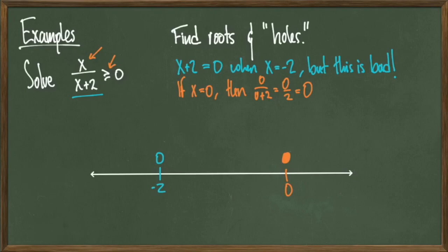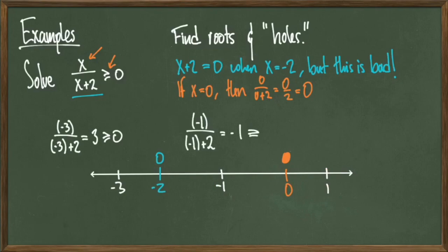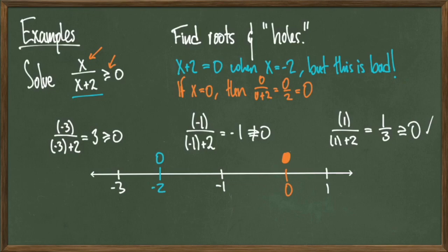But 0 is a root and my inequality involves a greater than or equal to sign, so I'll shade that circle in because that point is going to be included in my solution set. Now I can pick test points: negative 3, negative 1, and positive 1. Plugging in negative 3 gives me positive 3, which is greater than 0. Plugging in negative 1 gives me negative 1, which is not greater than 0. Plugging in positive 1 gives me positive 1 third, which is greater than or equal to 0. I want the x values less than negative 2 and those greater than or equal to 0, so I shade those in.